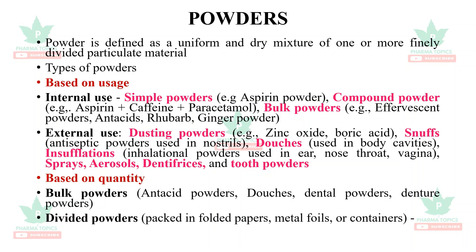Based on usage, there are two kinds of powders. One is for internal use — simple powders such as aspirin, compound powders with more than one component such as aspirin, caffeine, and paracetamol, and bulk powders such as effervescent powders, antacids, rhubarb powder, and ginger powder.